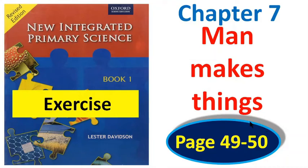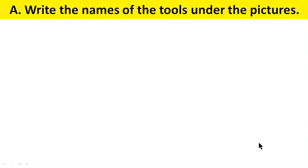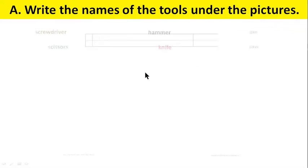Man makes things. Exercise. Page number 49 and 50. Question number A. Write the names of the tools under the picture.